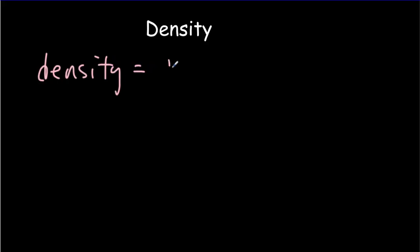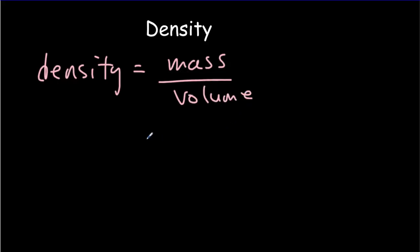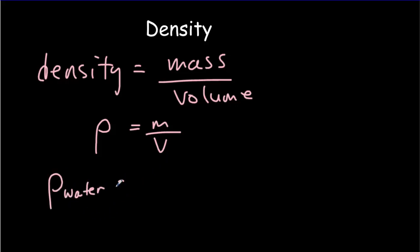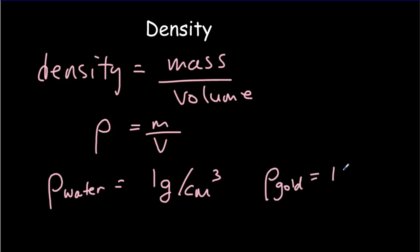Density is the mass per unit volume of a substance or object. We typically use the Greek letter rho for density, a small m for mass, and a big V for volume. The density of water is one gram per centimeter cubed, or one gram per milliliter. A cubic centimeter of water has a mass of one gram, whereas gold is much more dense — a cubic centimeter of gold has a mass of 19.3 grams.